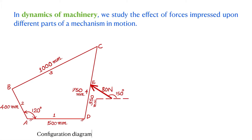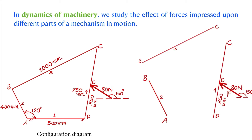Here we need to construct the configuration diagram. You can see one configuration diagram where a four-bar mechanism is subjected to some external force. Whenever this external force acts on link CD, it causes a force to transmit through links BC or AB. We need to evaluate the forces passed through these links, so we construct free body diagrams of all links separately and calculate such forces. This is what comes under force analysis in Dynamics of Machinery.